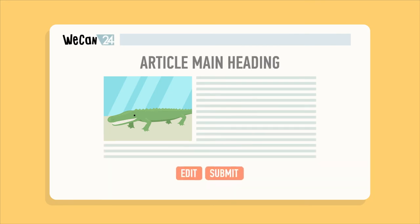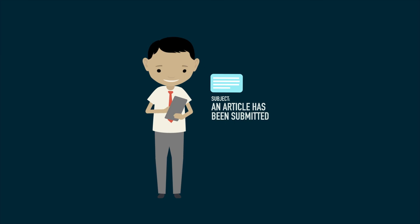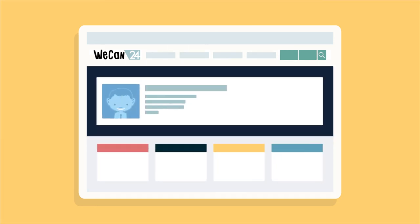Once you've submitted your article, you will see a preview of what your article will look like once it is live. If you are happy with your article, you can choose to submit, or you can choose to make additional changes. After you click Submit, your teacher or newspaper editor will receive an email or SMS notification that you have uploaded a new story. Once your teacher or editor has approved the story, you will be able to view it on your school's homepage as well as your profile page.